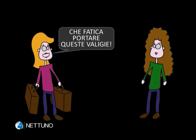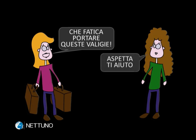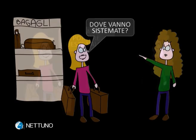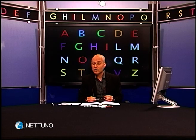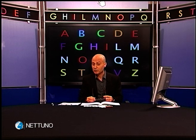Let's look at these scenes. Che fatica portare queste valigie. Aspetta, ti aiuto. Dove vanno sistemate? Lì sopra, vedi, c'è un vano per i bagagli. In questo dialogo c'è una forma particolare del passivo.